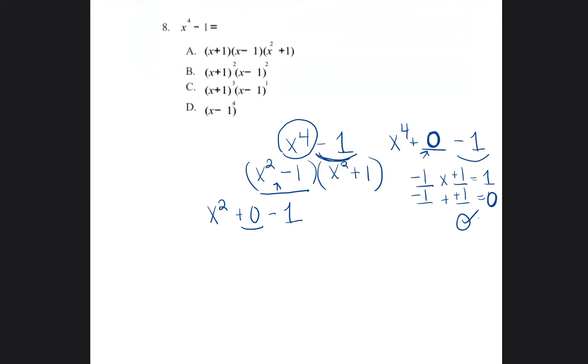Again, I need to find two numbers that multiply to equal negative one and add together to equal zero, that middle number. That's negative one and one.